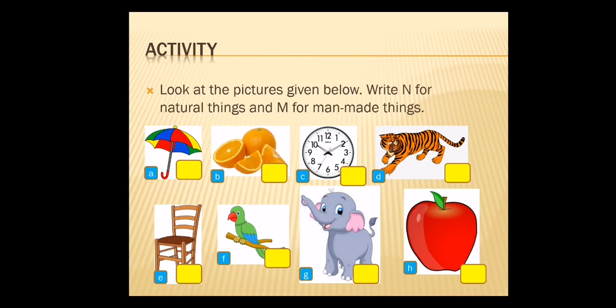Now let's move into the activity. Look at the pictures given below. Write N for natural things and M for man made things. You can take one paper or write it in your rough note. Let's write — letter A.